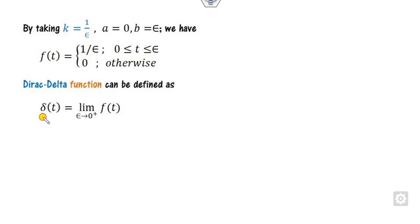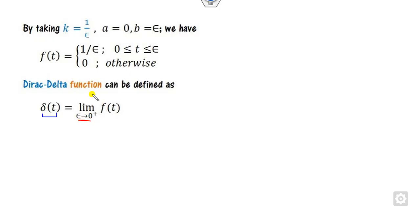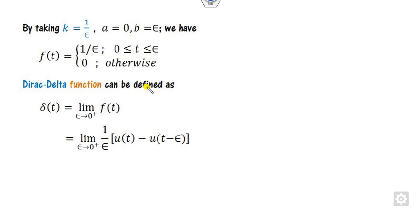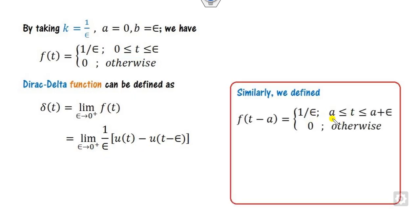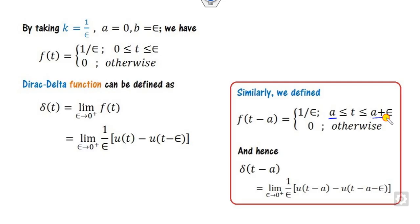In general, we define the Dirac delta function as the limit when epsilon approaches 0. The meaning is: if you take the width epsilon as small as possible, approaching 0, we define the Dirac delta function. You can substitute this in terms of the unit step function. More specifically, if the center is at 'a' and the width is epsilon, the interval is from a to a+epsilon, with height 1/epsilon. As epsilon approaches 0, this gives the unit step function representation of the delta function.